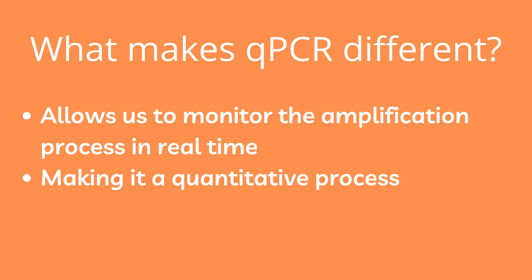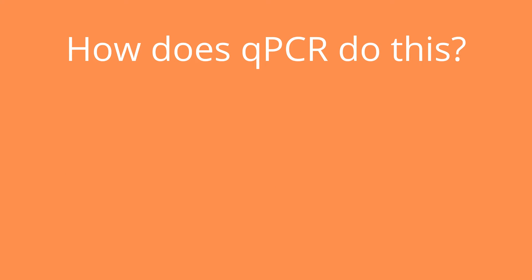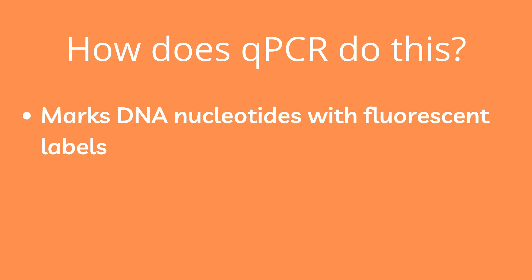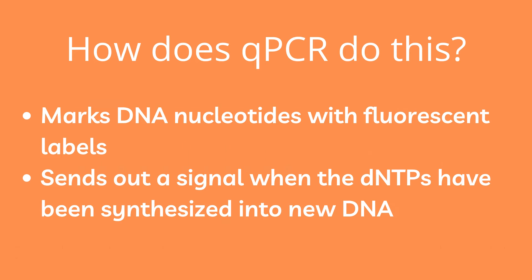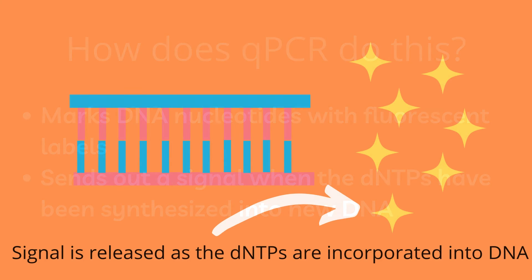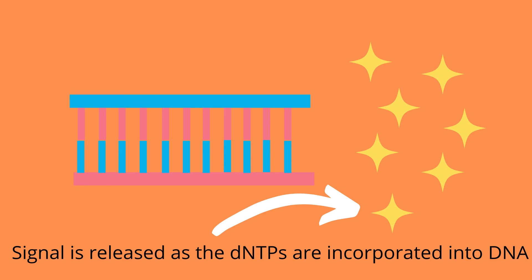How is qPCR different from normal PCR? The main difference lies in the fact that qPCR allows us to measure the PCR reaction while it is still occurring, turning the process from a qualitative one into a quantitative one, meaning we get real-time data that corresponds to the amount of amplified DNA as it is ongoing. qPCR marks the nucleotides used in DNA synthesis with fluorescent labels, and when these marked dNTPs are incorporated into the DNA strand, they release their label which releases a signal we can measure.